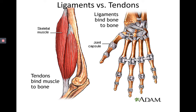Looking at a diagram, we can see that tendons bind muscle to bone. If the muscle is slightly contracted, it pulls on that tendon, stabilizing the joint. If it pulls more on that tendon, it moves the joint. Ligaments on the right attach bone to bone.